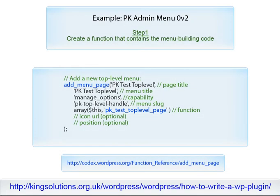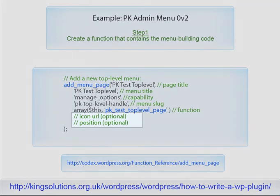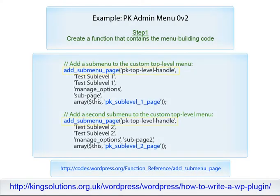Unless you have a very good reason to add a top level menu, WordPress recommends placing your menus within the existing dashboard structure. Notice you could designate an icon and menu position within the menu structure, but I would recommend simply accepting the default. The two function calls to add_submenu_page will add the submenus test sublevel1 and test sublevel2 to our custom top level menu.